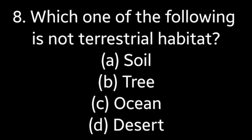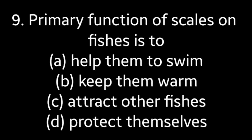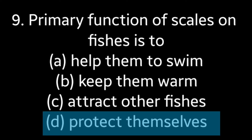Eighth question: Which one of the following is not a terrestrial habitat? Option A: soil, option B: tree, option C: ocean, option D: desert. Answer is option C: ocean. Ninth question: The primary function of scales on fishes is to — option A: help them swim, option B: keep them warm, option C: attract other fishes, option D: protect themselves. Answer is option D: protect themselves.